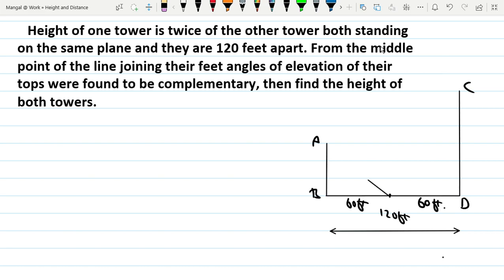From point M, the angle of elevation to tower AB is theta. The angle of elevation to tower CD is complementary, which is 90 degrees minus theta. Let's set up the equations.